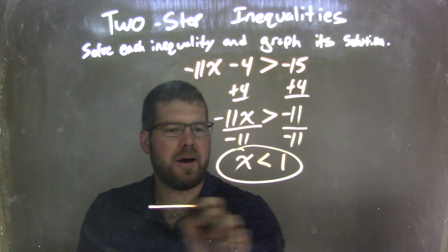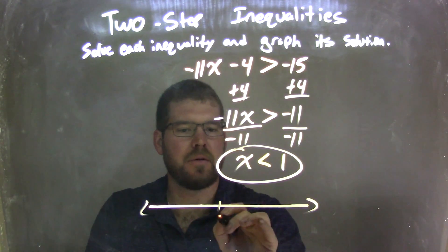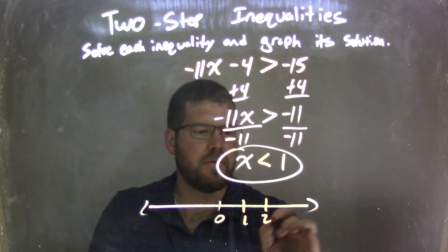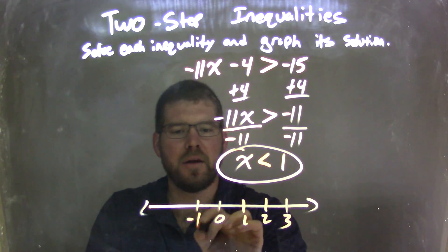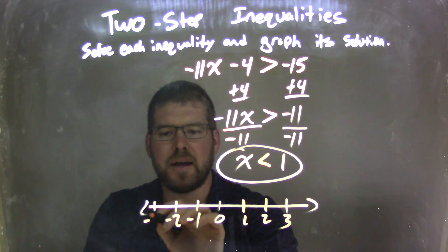Positive 1, excuse me. So now I have to graph this. 0, 1, 2, 3, negative 1, negative 2, negative 3.